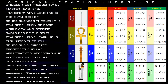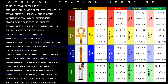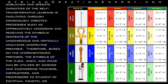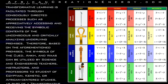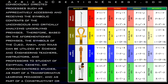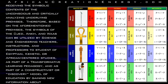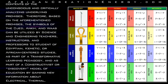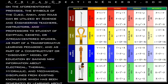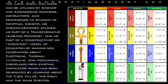Transformative learning is the pedagogical modality utilized most frequently by master teachers. Transformative learning is the expansion of consciousness through the transformation of a basic worldview and specific capacities of the self. It is facilitated through consciously directed processes, such as appreciatively assessing the symbolic contents of the unconscious and critically analyzing the underlying premises. Therefore, the symbols of the Jed, Ankh, and Was can be utilized by science and engineering teachers, instructors, and professors for students of Egyptian, Kemetic, or African-centered studies as part of a transformative learning pedagogy and a constructivist or discovery model of education — gaining new information about electrical, thermal, hydraulic, and mechanical disciplines from existing knowledge about the Jed Pillar, the Ankh, and the Was Scepter.